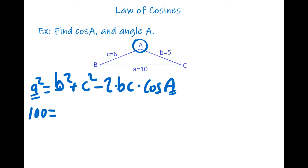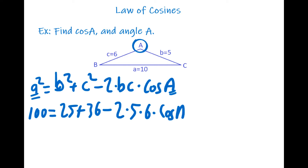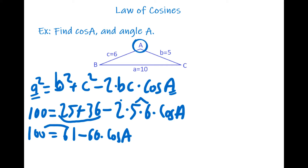100 equals b squared: b is 5, so 5 squared is 25; plus c squared: c is 6, so 6 squared is 36; minus 2 times 5 times 6 times cosine A. Adding 25 and 36 gives 61. So we have: 100 equals 61 minus 60 times cosine A.